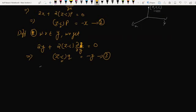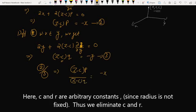We will take equation 2 divided by equation 3. This implies P/q = x/y. Z minus c cancels. Then you will get Py = qx. This is the required PDE.